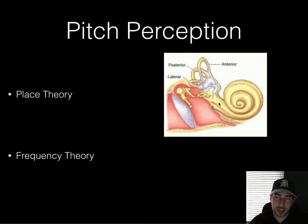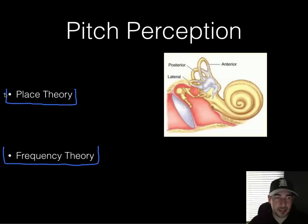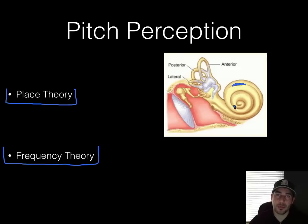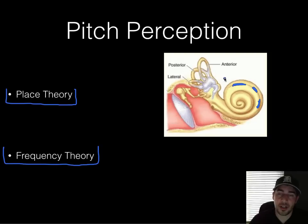The cochlea is the key player in sound. There are two theories of how we distinguish sound: place theory and frequency theory. Place theory is straightforward — it says that depending on what place on the cochlea is activated or starts vibrating, it will send a different neural message back to your brain. Each location corresponds to a different signal.